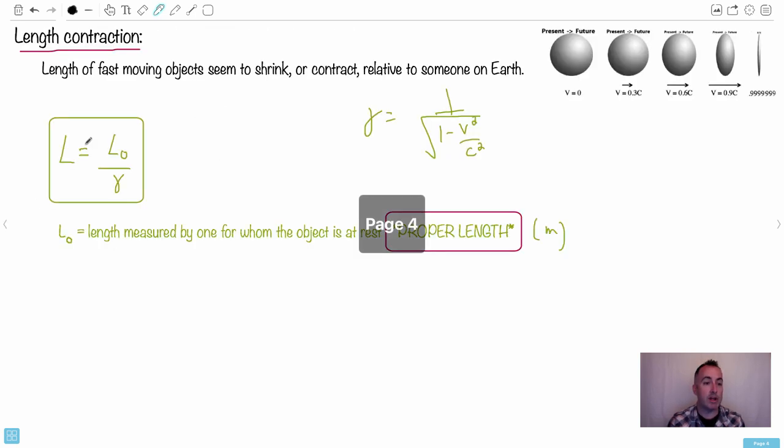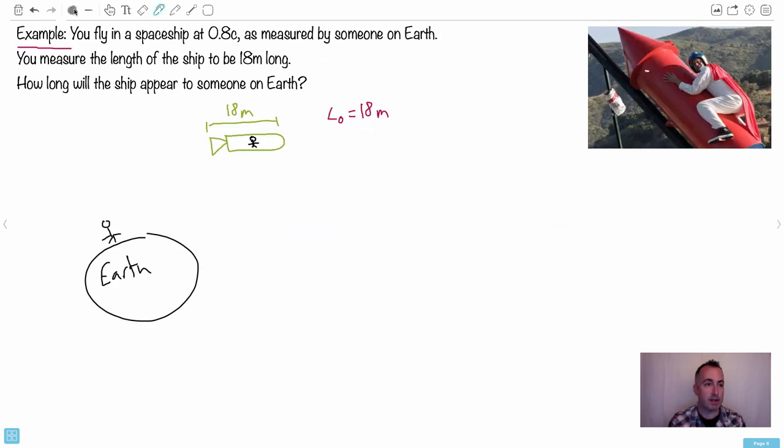In other words, we're going to use this equation right here, L is L₀ over gamma. So let's maybe write that down. That tells the examiner you know what you're doing. So if we do this, then what are we trying to solve for? We're trying to find L, the length that someone on Earth is going to see you appear to be. In this case, you're going to solve for L. So it's just going to be L₀, which is 18 over gamma. I guess the next problem is how do we find gamma?